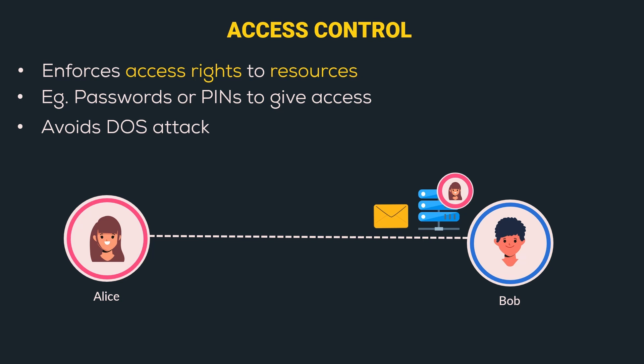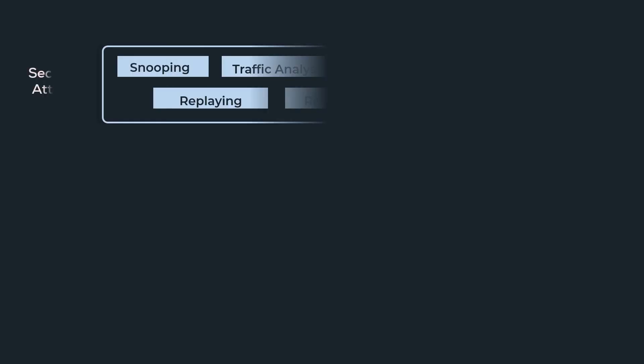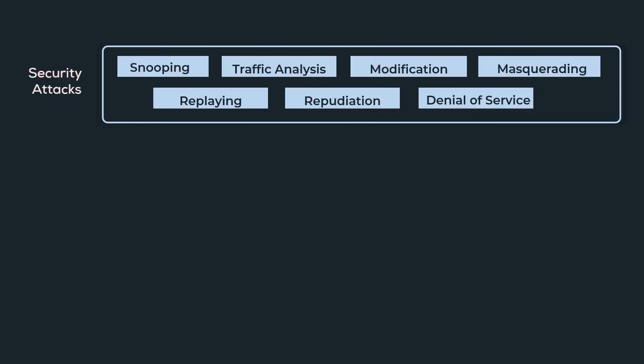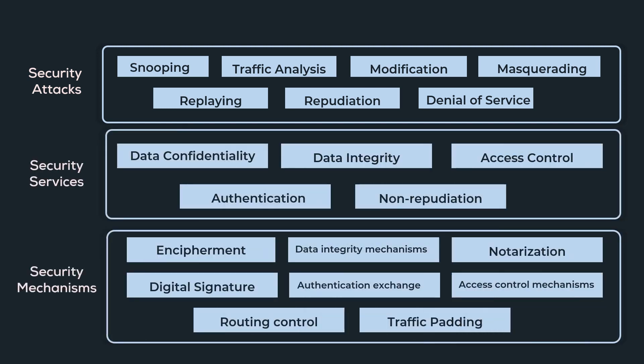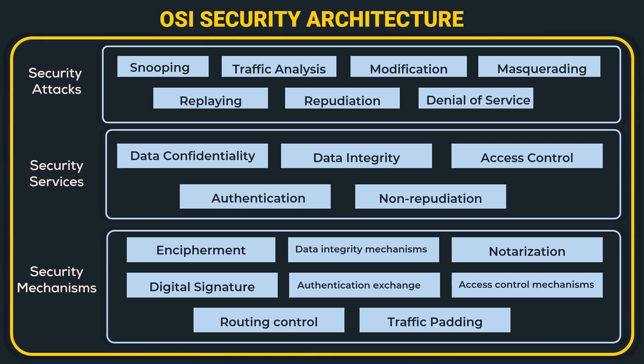With this, we have successfully completed all the security mechanisms. Let's have a recap. We started with security attacks, covering all 7 security attacks. Then we covered all 5 security services. And today we completed all 8 security mechanisms. When we group all three, we have the OSI security architecture, which provides a systematic approach to organizing the task of providing security — starting with understanding security attacks, then having security services to provide specific protection to system resources, and then security mechanisms that tell us how to implement those services.